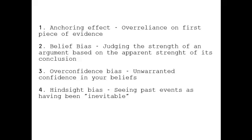It then gave these students tests for seven kinds of biases. First, the anchoring effect — over-reliance on the first piece of evidence. Second, belief bias — judging the strength of an argument based on the apparent strength of its conclusion.